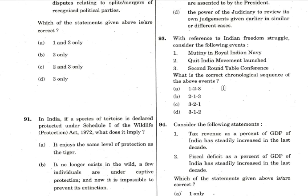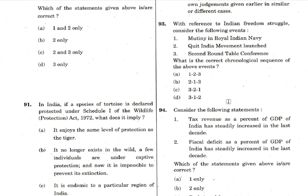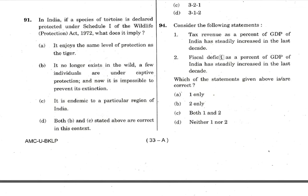Question 94 is based on economic survey trends for the last decade. Statement one — tax revenue as a percentage of GDP has steadily increased — is true because our economy has been growing so tax collection increases. Statement two — fiscal deficit as a percentage of GDP has steadily increased — is false because after the Modi government came, fiscal deficit actually reduced one or two times. So it did not steadily increase from 2007 to 2017. Answer is option A — statement one only.